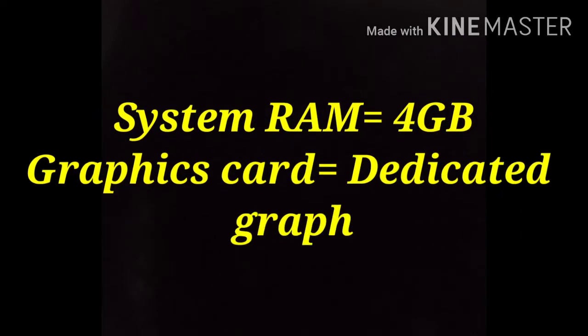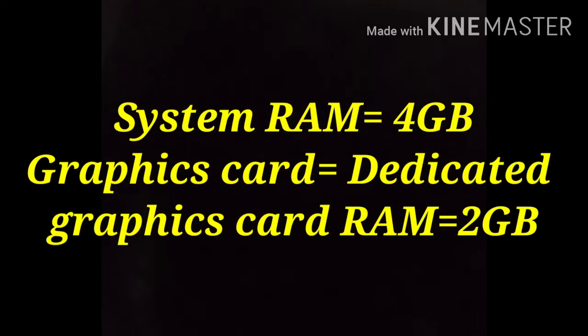For example, in a system where the RAM is 4GB, and the graphics card type is dedicated with 2GB of graphics RAM — the 2GB RAM for the graphics card is additional. It will not share the system RAM, so the working of this system will be very fast because the graphics card is not sharing the original system RAM.